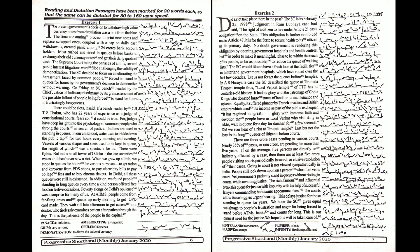Going to court is not viewed sympathetically in India. People still look down upon a person who often visits court. Yet, commoners patiently stand in queues without rioting in courts while awaiting justice. The rich, famous and influential break the queue for justice with impunity with the help of successful lawyers commanding handsome appearance fees. The courts allow these biggies urgent hearing. This delays justice for those standing in queue for years.